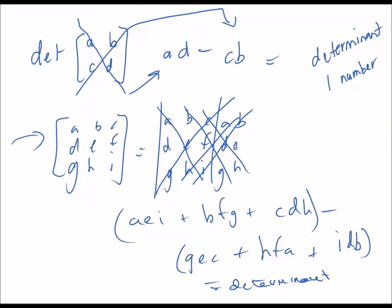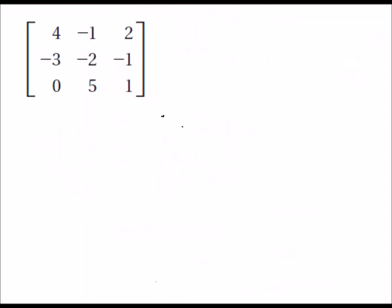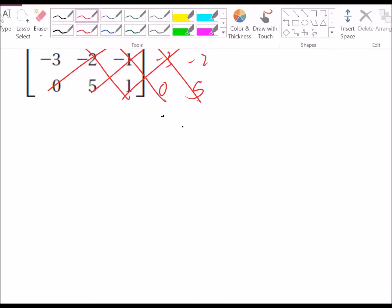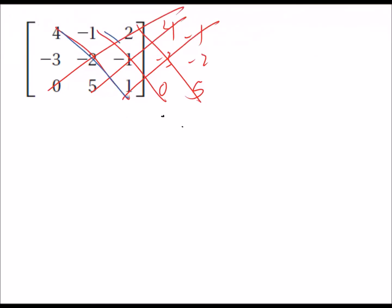Let's try to evaluate the determinant of this matrix. If you're going to do this by hand, you would extend it over and write the first two columns, then add the blue diagonals together and subtract the red ones, and that gives you the determinant.